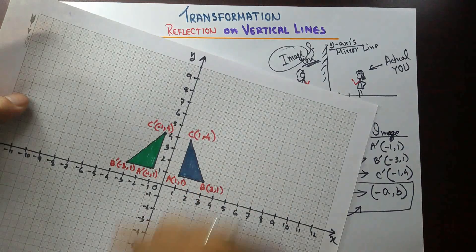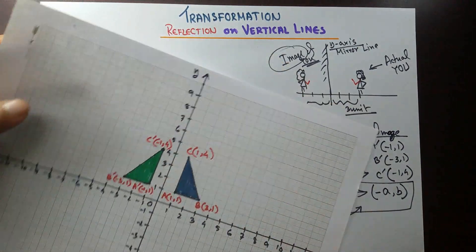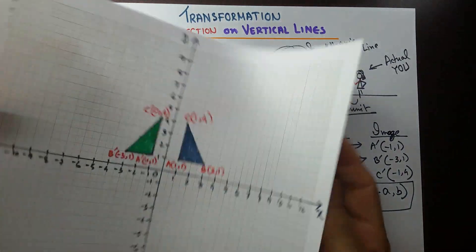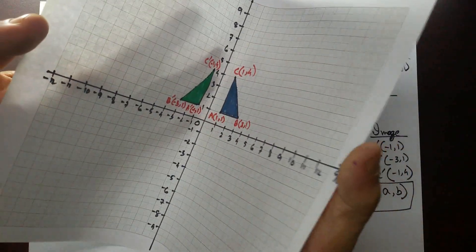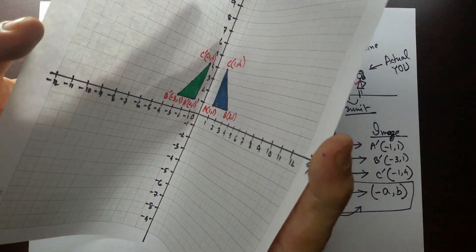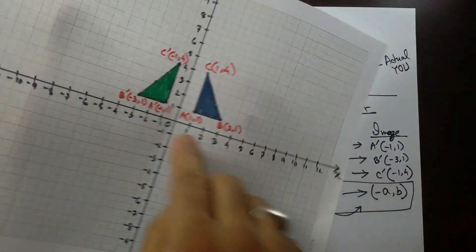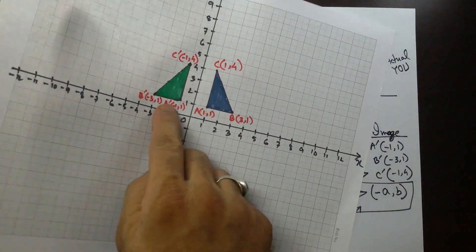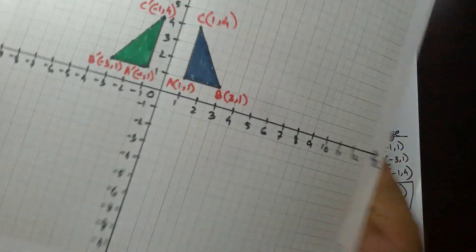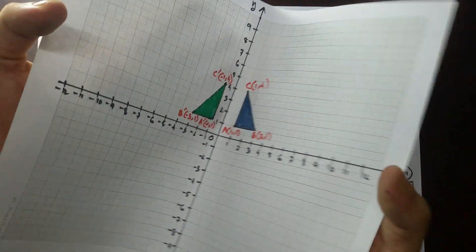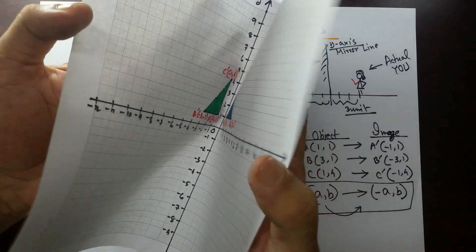You already know y-axis is your line of reflection. If you fold it along this line of reflection, you can see all the corresponding points — A and A prime, B and B prime, C and C prime — they coincide. They coincide with each other.